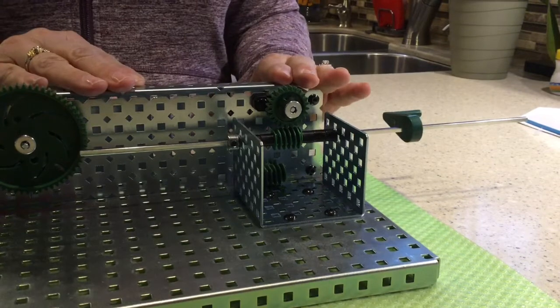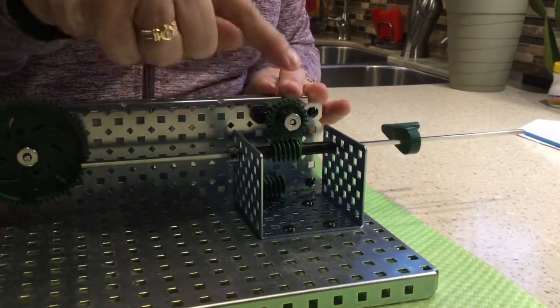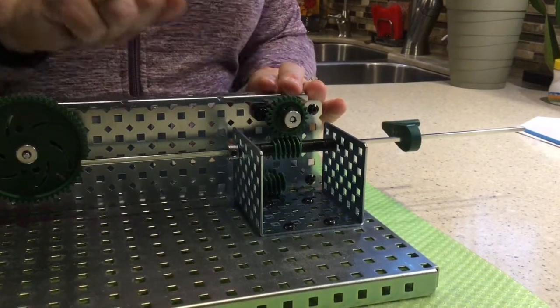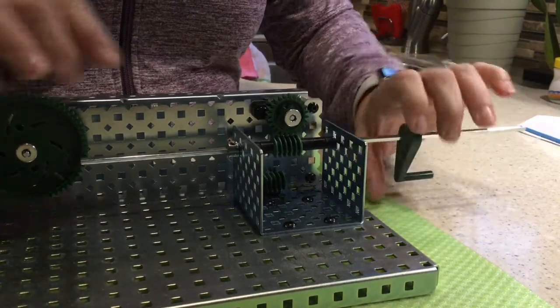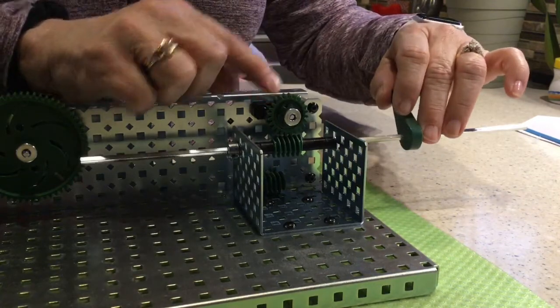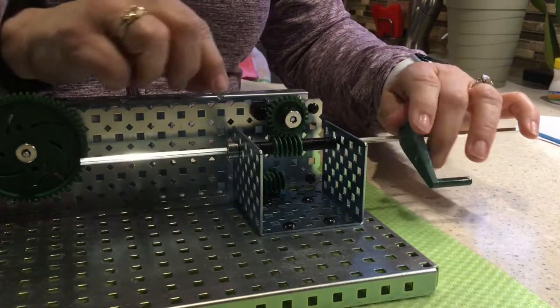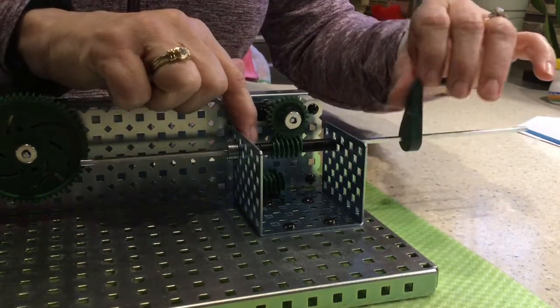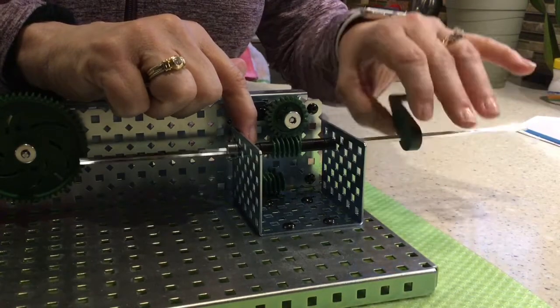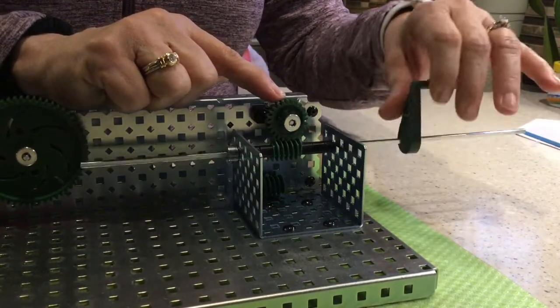So now let's talk about the gear ratio. Remember I told you that this is only one tooth and this is 24. So when you look at when I turn this around, you'll notice that that gear up here is just moving ever so slowly. In fact, the worm has to go around 24 times for this wheel to go around one time.